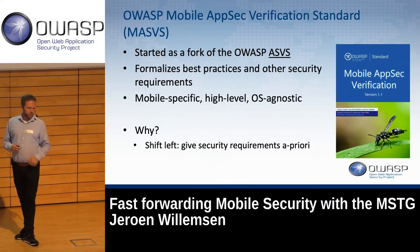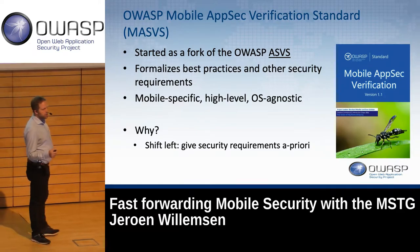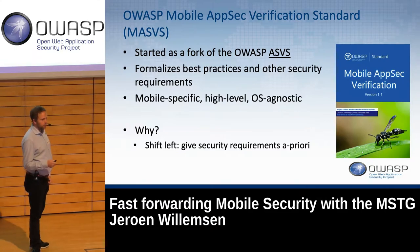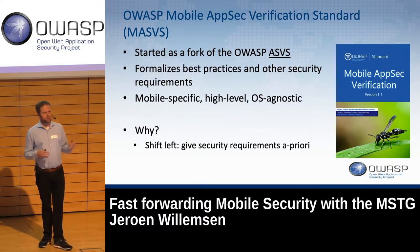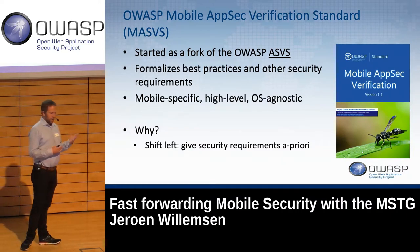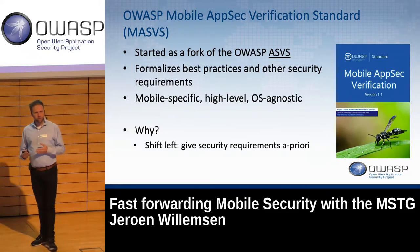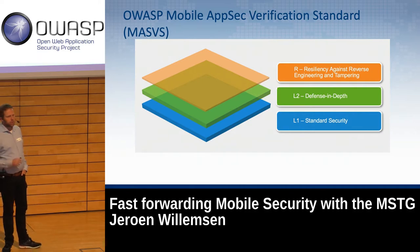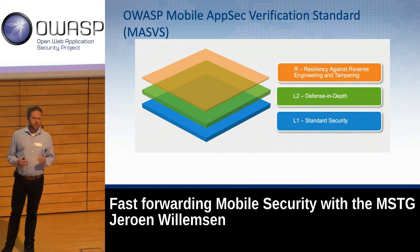The MASVS started as a fork from the OWASP ASVS because the ASVS used to have some mobile parts that were heavily outdated. We formalized best practices and security requirements — it's mobile-specific, high-level, and OS-agnostic, so requirements can be translated into iOS, Android, or any other mobile OS. It's structured differently from the ASVS: Level 1 is standard security, essentially mobile security hygiene — the basic controls you should always implement no matter what.